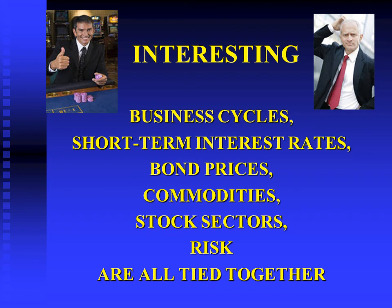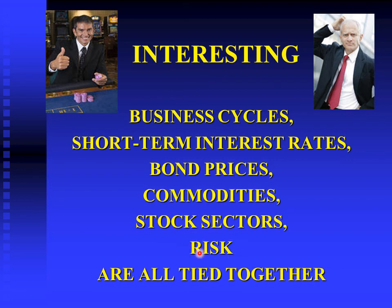Everything is connected. The investment process starts with the business cycle — is the economy strong or weak? What is the direction of interest rates? Do they support the conclusion from the business cycle? If the economy is growing slowly, short-term rates should be heading down, bond prices should be strong, and commodities should be fairly weak. Therefore, only certain stock sectors will be attractive. All these items are tied together and should be part of your discipline and your investment process.